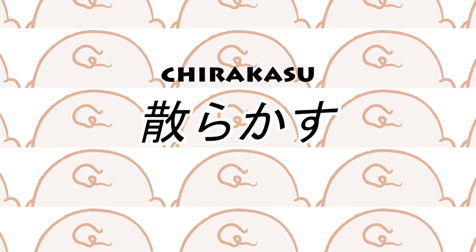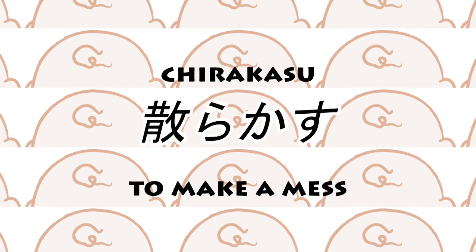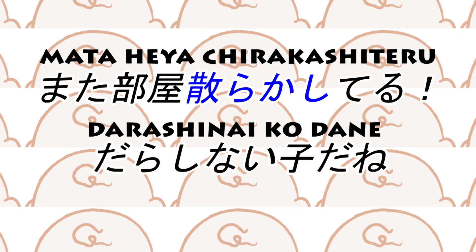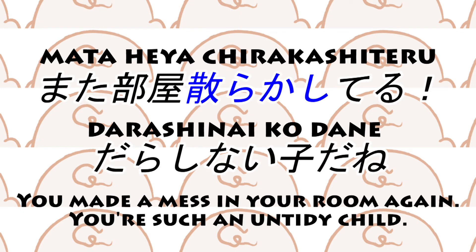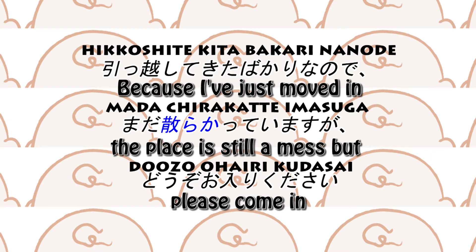Having introduced these technical terms, we can now move on to the morpheme 散らかす, which is a verb that means to make a mess. Let's look at some examples of 散らかす when it is used by itself. また部屋散らかしてる。だらしない子だね。(You made a mess in your room again. You're such an untidy child.) 引っ越してきたばかりなので、まだ散らかっていますが、どうぞお入りください。(The place is still a mess because I've just moved in, but please come in.)